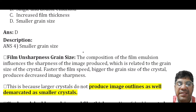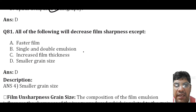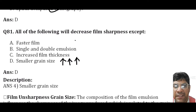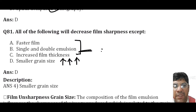Regarding factors that decrease film sharpness — all of the following decrease film sharpness except smaller grain size in the film, which leads to increased film sharpness. Faster film has a large grain size leading to reduced sharpness, and single and double emulsions can contribute to increased film thickness.